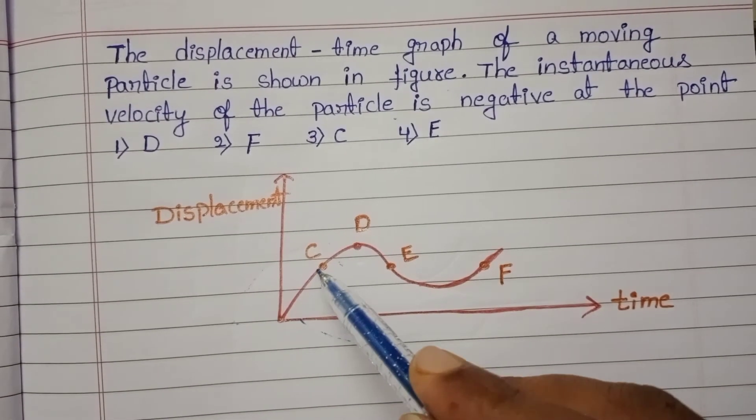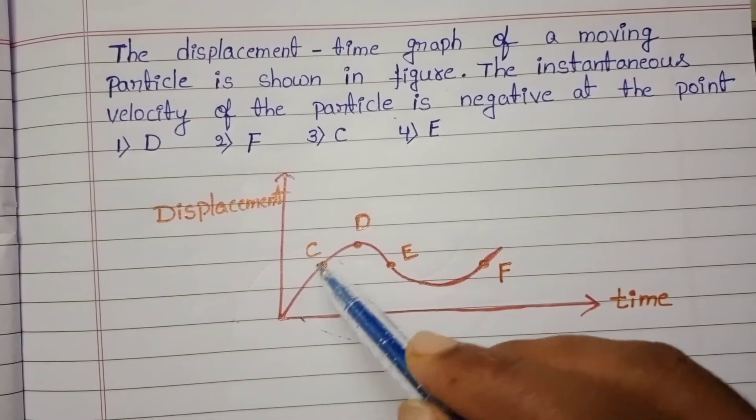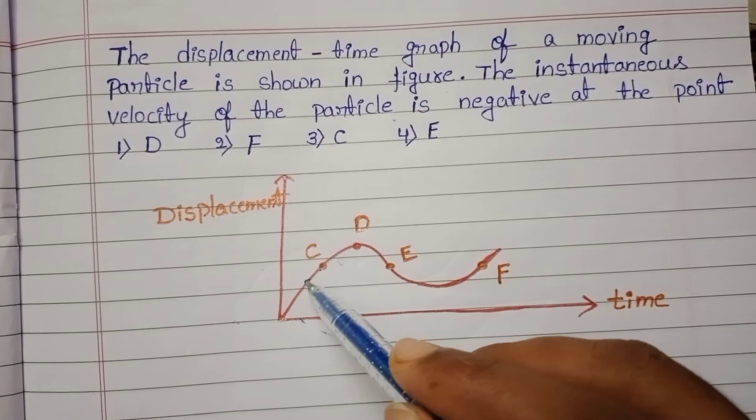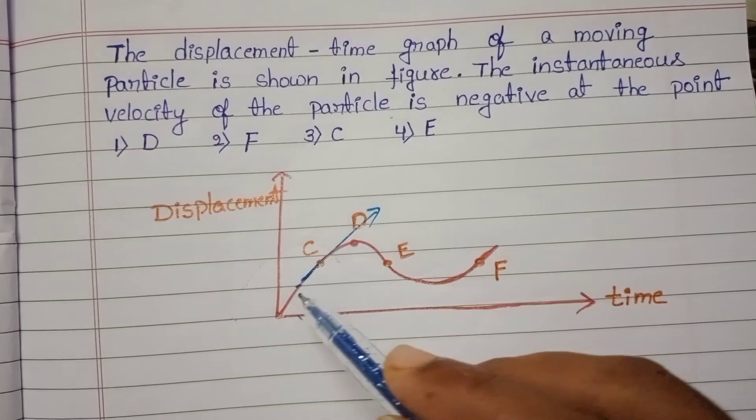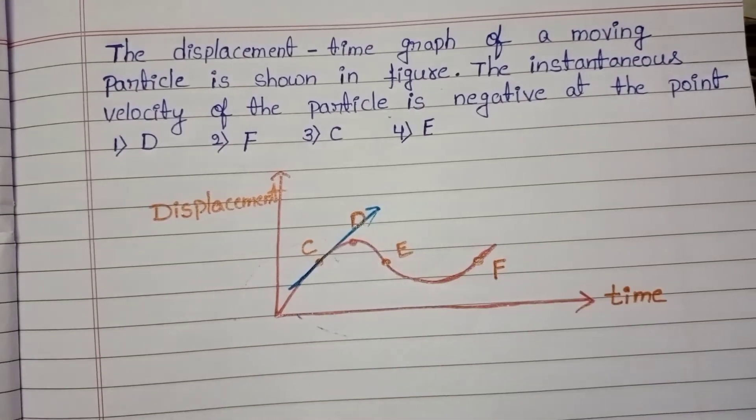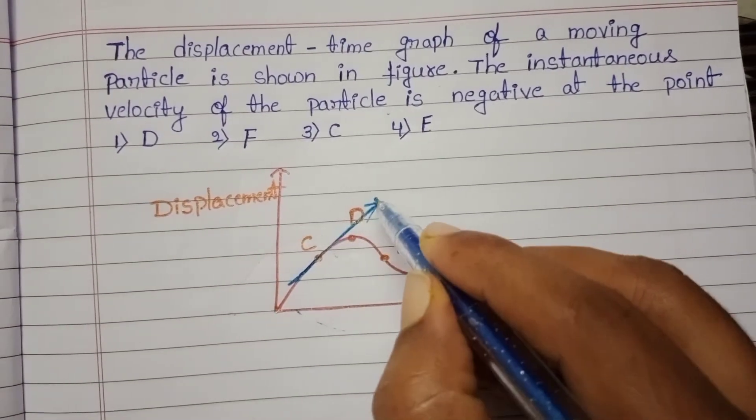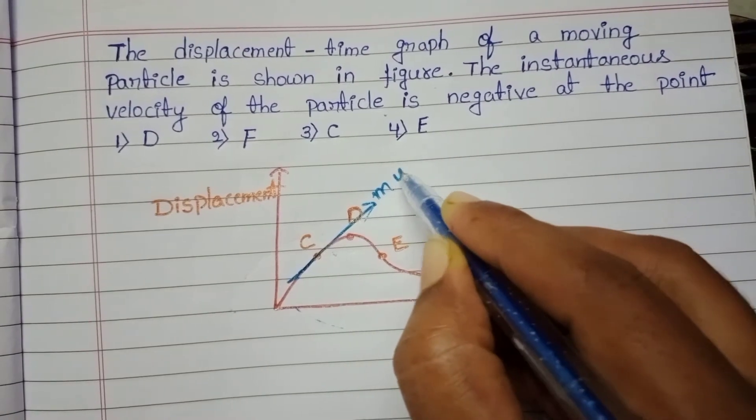So first point, at this point draw the tangent. So here this tangent line is acting in upward direction. Here slope is positive.